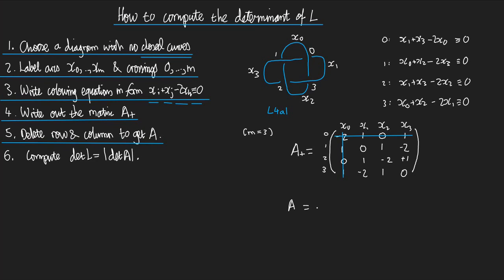So A is equal to the matrix 0, 1, minus 2, 1, minus 2, 1, 0.